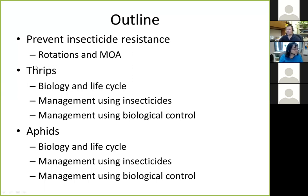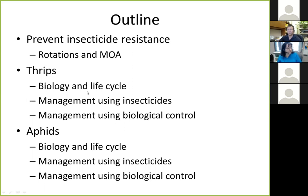Here's a brief outline of what I will present today. First, I'll discuss what rotations are and the importance of mode of action, because one component of integrated pest management is the use of insecticides and we need to know how to manage those properly. Then I'll go into our two major topics: thrips — a little about their biology and research findings, and management using both insecticides and biological control — and then aphids, covering their biology, life cycle, and management strategies.